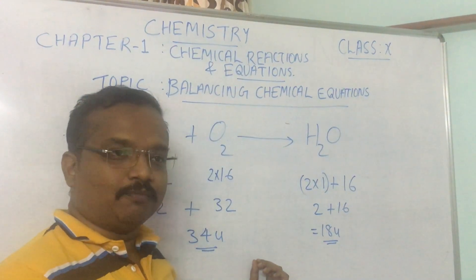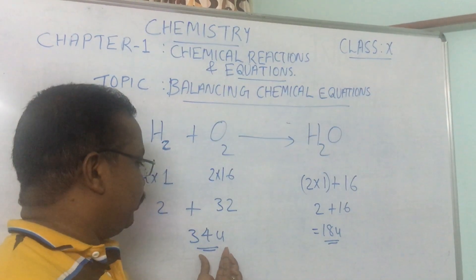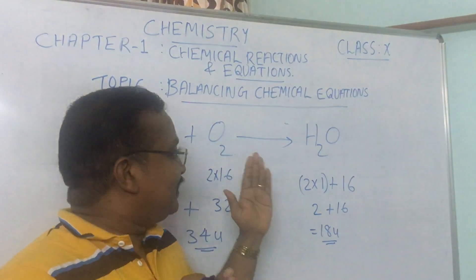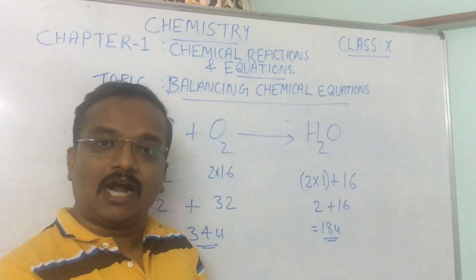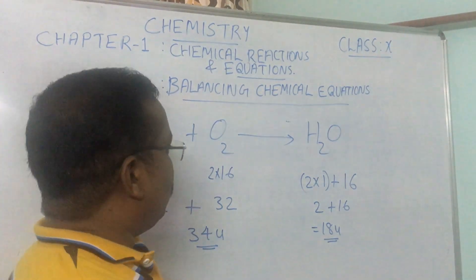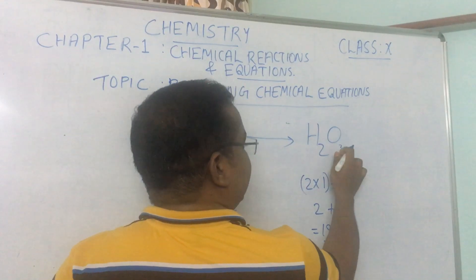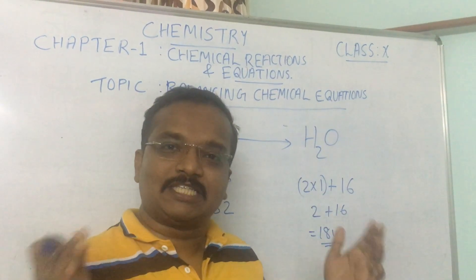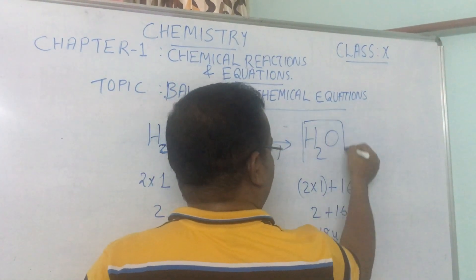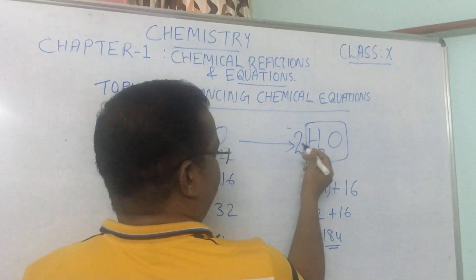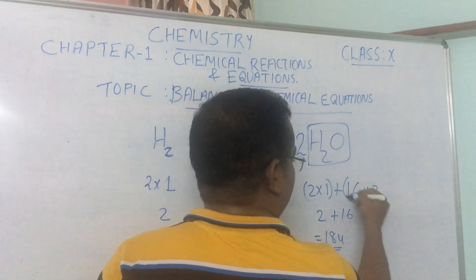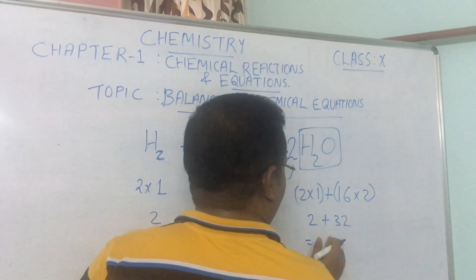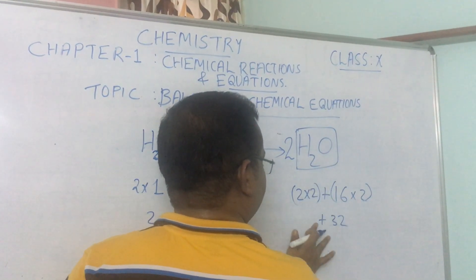So this equation is wrong. According to the law of conservation of mass, mass can neither be created nor destroyed, yet 34u of reactants formed only 18u of water — that is the wrong concept conveyed by this unbalanced equation. To balance it, we cannot put a subscript 2 inside H₂O because H₂O₂ is a different substance — that is hydrogen peroxide. So we box H₂O and place a coefficient 2 outside.